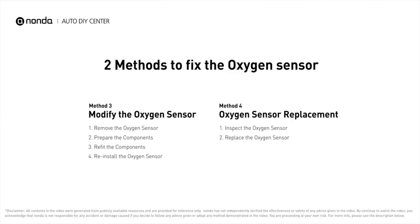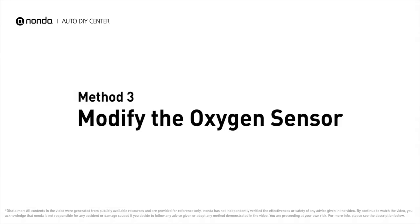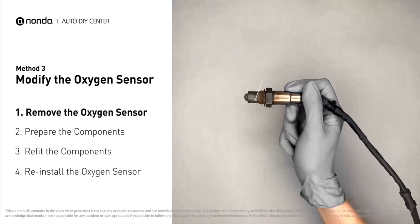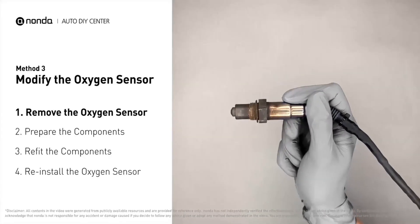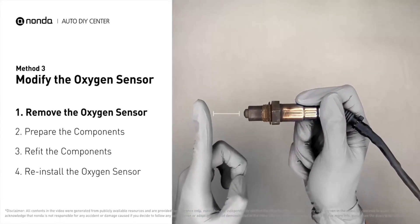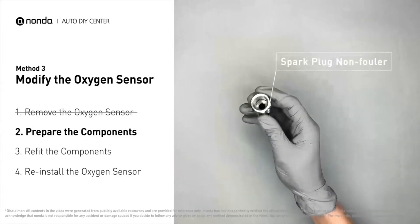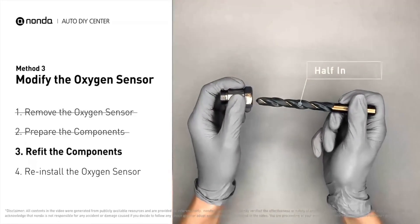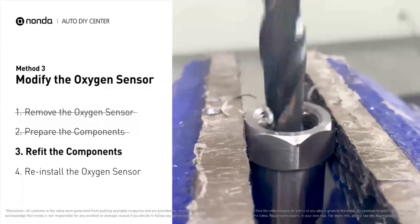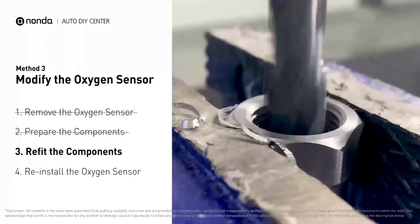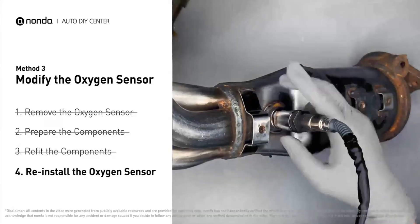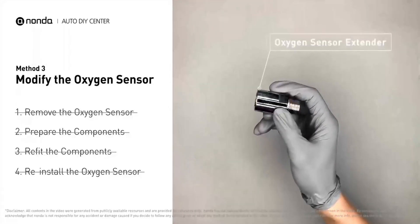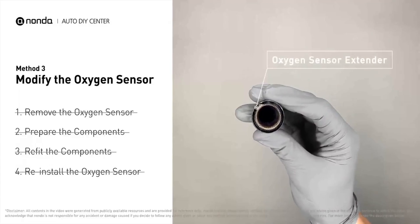Here are two methods to fix the oxygen sensor. Method three: modify the oxygen sensor. You can remove the oxygen sensor from the converter and fix it by putting some extra space between the sensor and the converter. First, get a spark plug non-fouler, then use a half-inch drill to refit it. The spark plug non-fouler now has enough space to fit into the oxygen sensor. Put them together and put them back on the catalytic converter. If refitting is too complicated, you can also get parts like an oxygen sensor extender or oxygen sensor socket to create that space.